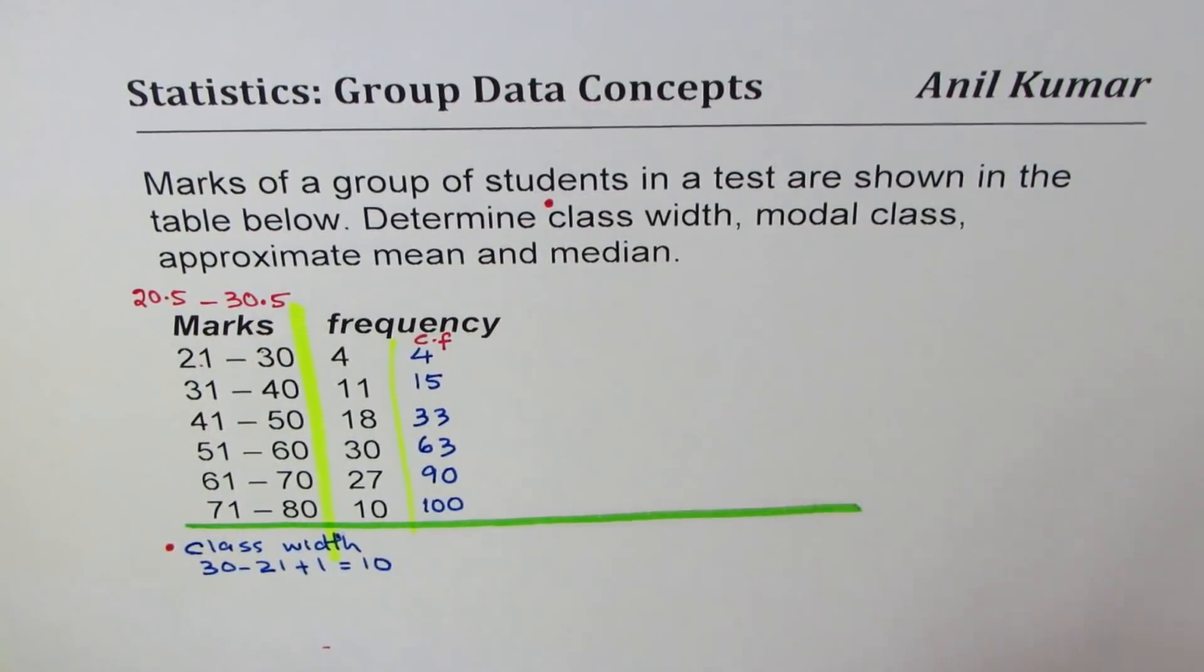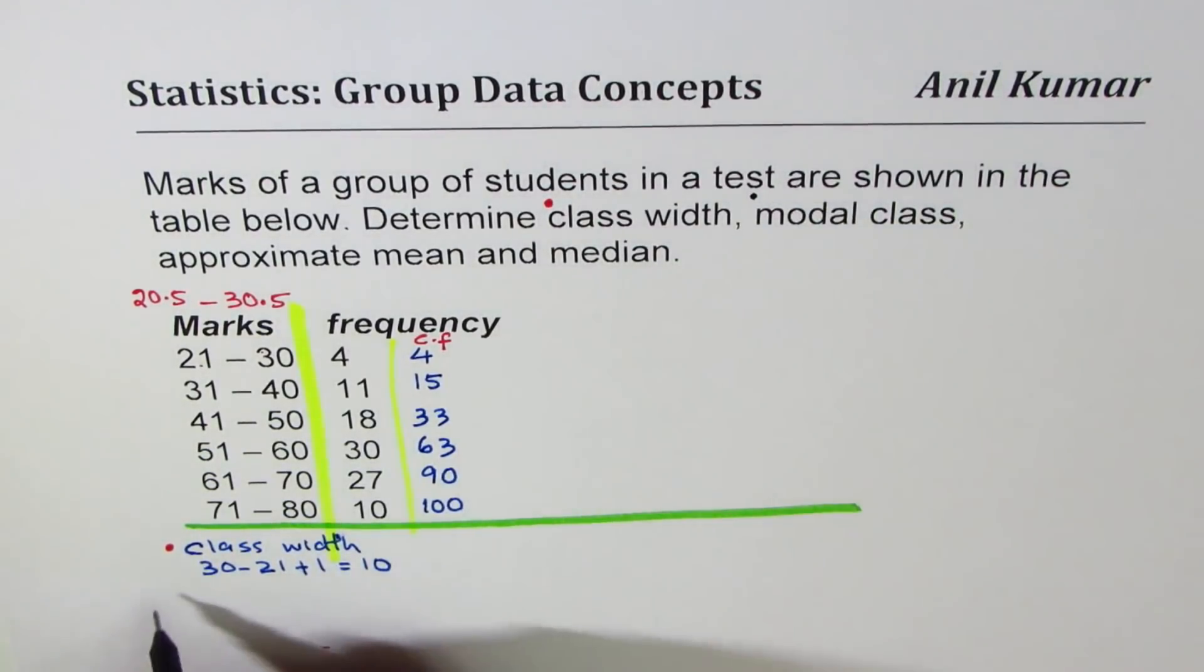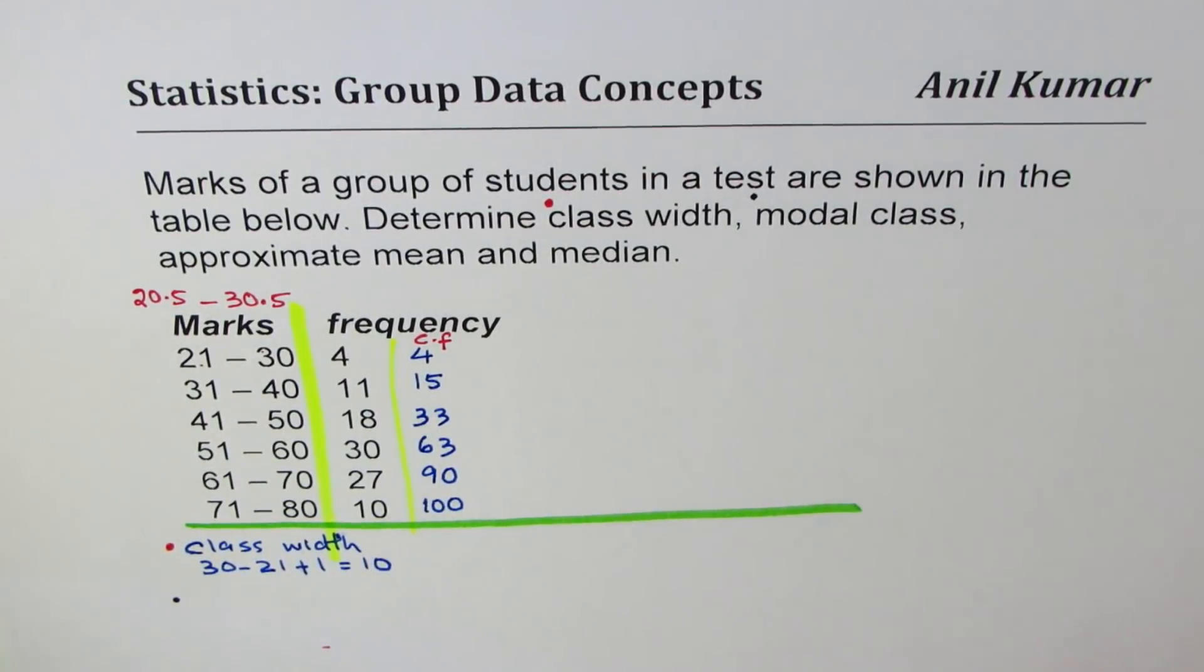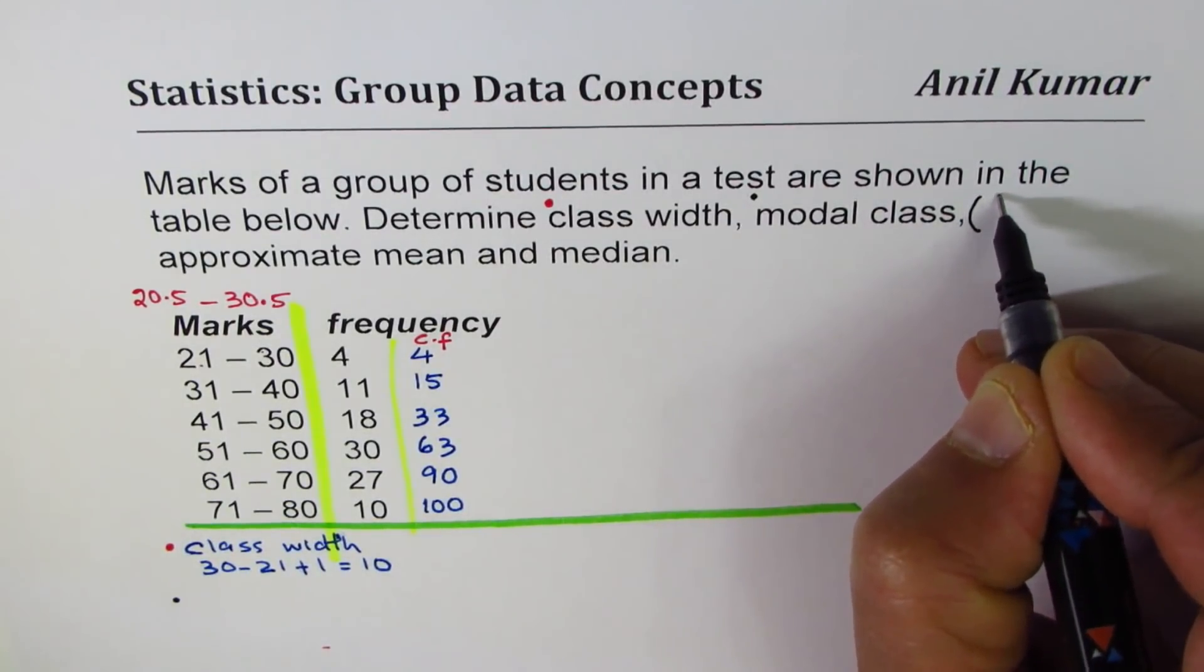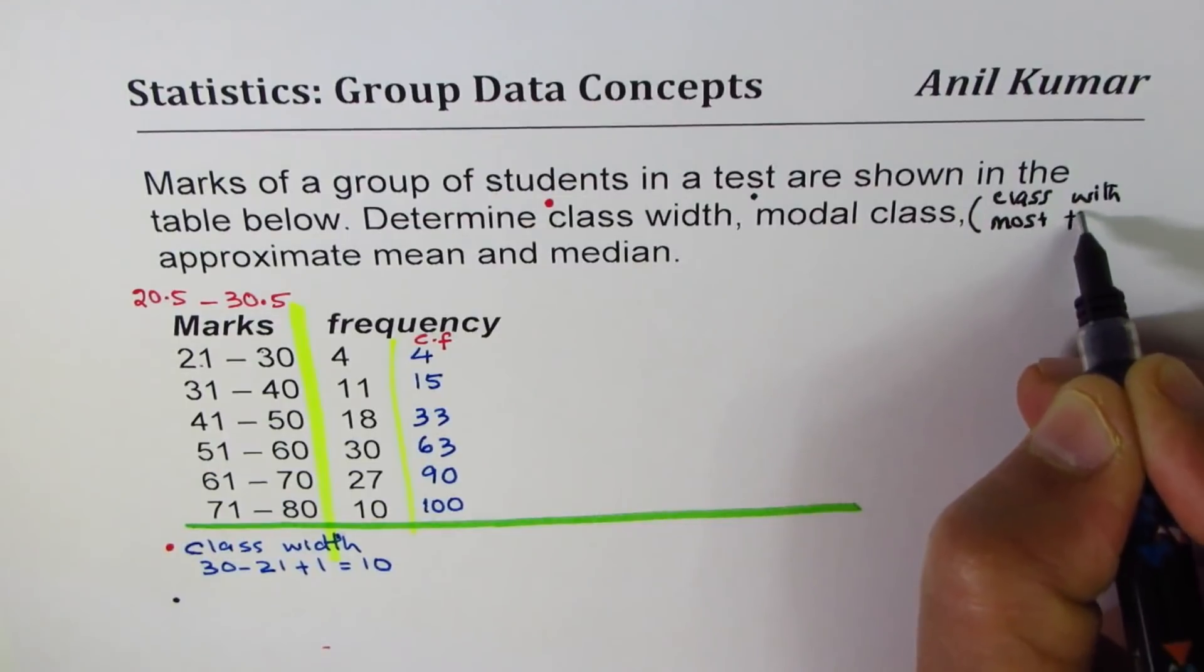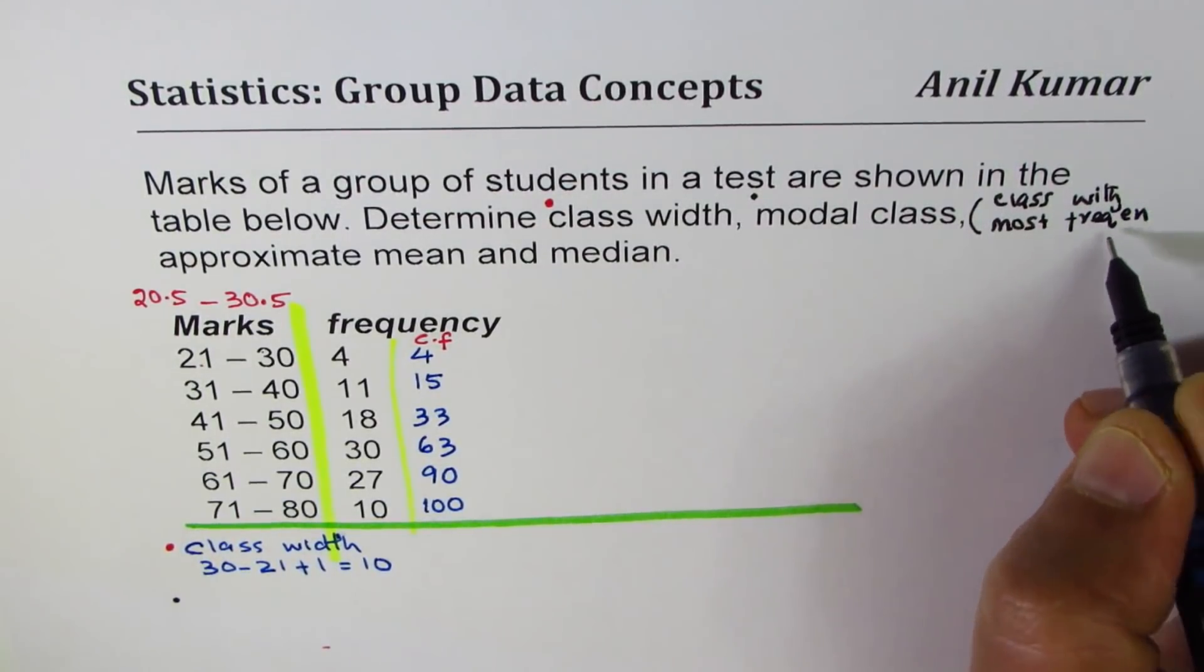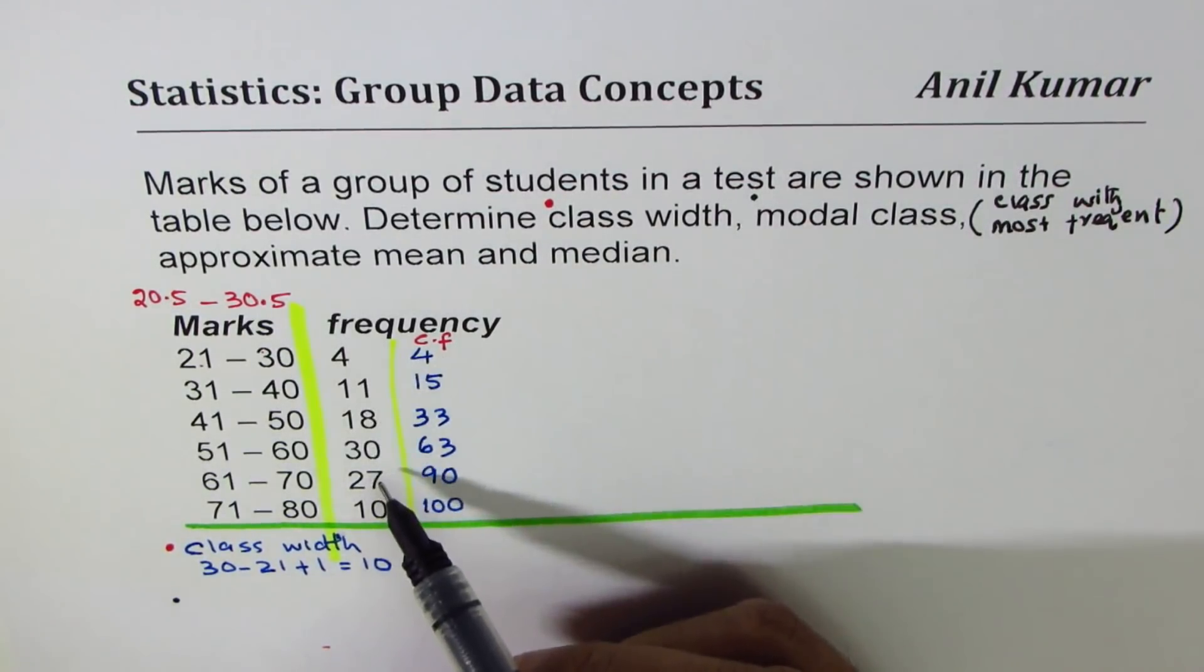Next question here is to find the modal class. Modal class - mod means most frequent. So we want the class with most frequent count.